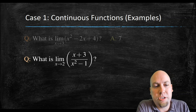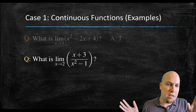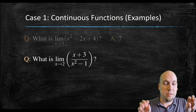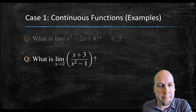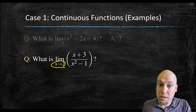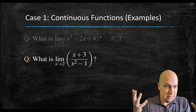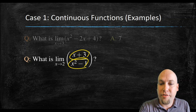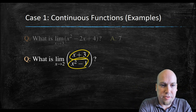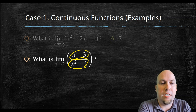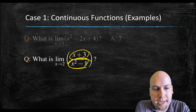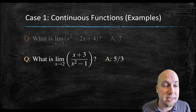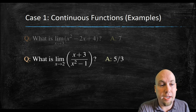Next example: the limit as x approaches two of this rational function. I have to be a little bit careful because that function is not continuous everywhere — it's got gaps, and it's not continuous at x equals one or x equals minus one, where there are asymptotes. But I don't care; I'm asking about the limit as x approaches two. At two, this function is continuous — rational functions, meaning a polynomial divided by a polynomial, are continuous as long as they're defined at the point in question. This function is defined at x equals two, so just plug in: two plus three gives five on top, two squared minus one gives three on the bottom. So you get five over three as your final answer.